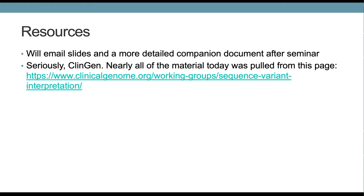For resources, I recommend going to the ClinGen website and looking through the sequence variant interpretation group's resources — nearly all of today's material was pulled from there. There are many published papers and technical white papers on how to apply these criteria, as well as a wealth of data about curation efforts already completed. Thank you for watching, and I hope you found this content from the University of Iowa useful.